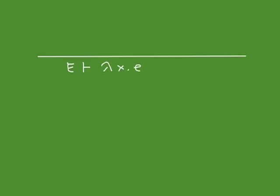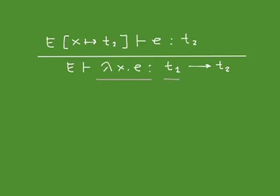For functions: if you have an abstraction lambda x . e typed in environment E, the abstraction should get an arrow type t1 → t2, where t1 is the type of the domain and t2 is the range. You type the body of the function under the assumption that the parameter has type t1. If, with that assumption added, you can type the body and give it type t2, then you can conclude the abstraction has type t1 → t2.